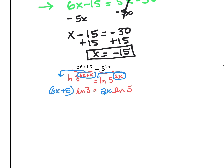Natural log of 3 is a number and natural log of 5 is a number. We want to get our x's alone, since there are x's on both sides. First I'll distribute the natural log of 3: we get 6x times natural log of 3, plus 5 times natural log of 3, equals 2x times natural log of 5.